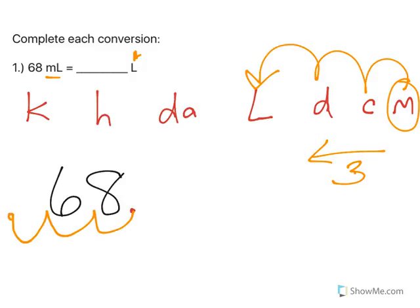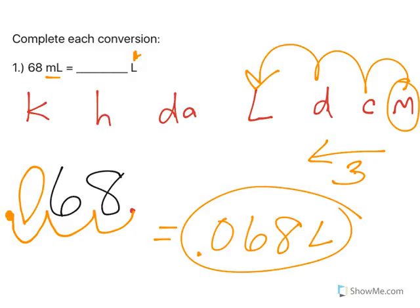I need to move that decimal three places to the left. So one, two, three, there's my new decimal point. So you see this empty hump, the empty hump gets a zero. So my final answer is 0.068 liters for the first one.